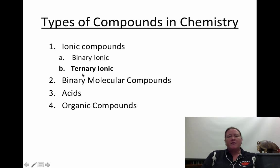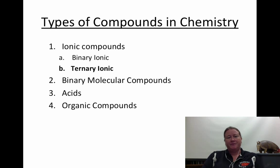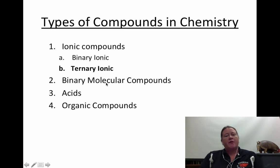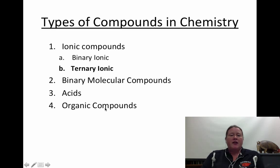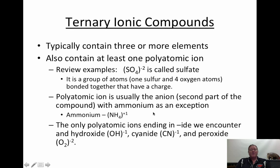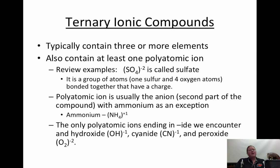Ternary ionic compounds are a little bit more complicated, but hopefully you'll realize that they're nearly as simple. A little later, in a future installment, we will talk about binary molecular compounds, which contain nonmetals, acids, and then if you take advanced chemistry, we focus heavily on organic compounds, which are really neat. So, a little bit of a review with polyatomic ions. Ternary ionic compounds will contain at least one polyatomic ion, and if you're looking at the formula, you can see that you will see three or more elements.